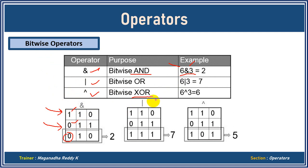Similarly, bitwise OR means if any one is true, OR will be true. So for 6 OR 3: 1 OR 0 is 1, 1 OR 1 is 1, and 0 OR 1 is 1. When you convert this binary result to decimal, the answer is 7. If you want to understand how we get 7 from binary 111, the links in the description will explain binary to decimal conversion.